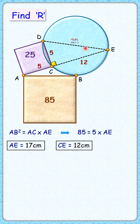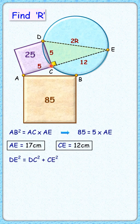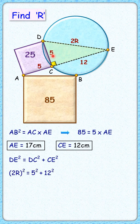So DE length will be 2R, and in this right-angle triangle, applying Pythagoras theorem, we get DE² = DC² + CE², or (2R)² = 5² + 12².